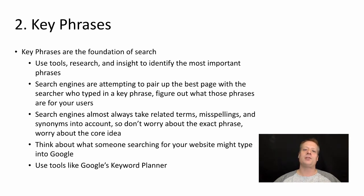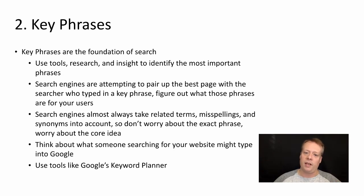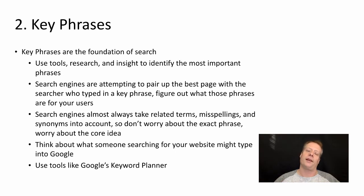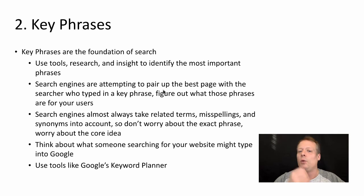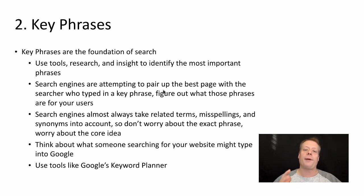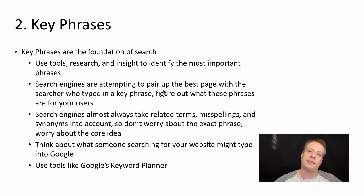Search engines are attempting to pair up the best page with the searcher who typed in a key phrase. You want to figure out what phrases your best users are likely to type in. Search engines almost always take related terms, misspellings, and synonyms into account, so you don't need to worry about getting the exact wording correct. You want to get the core idea right. You can use tools like Google's Keyword Planner to help you out.